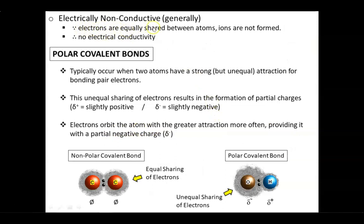Finally, since electrons are equally shared between the atoms, ions are not formed. Without these ions, non-polar covalent compounds tend not to be electrically conductive.